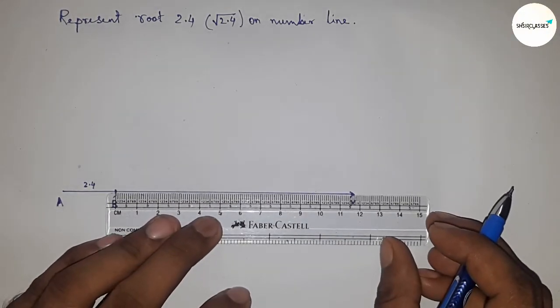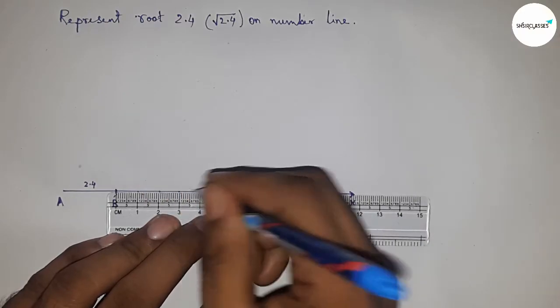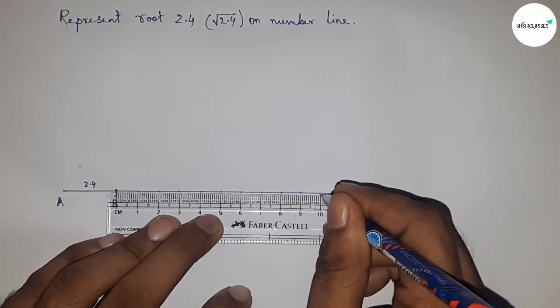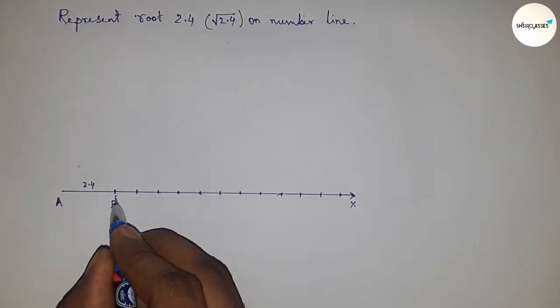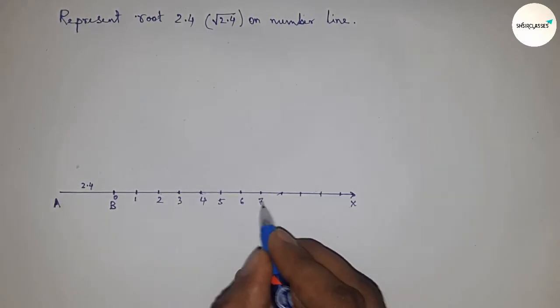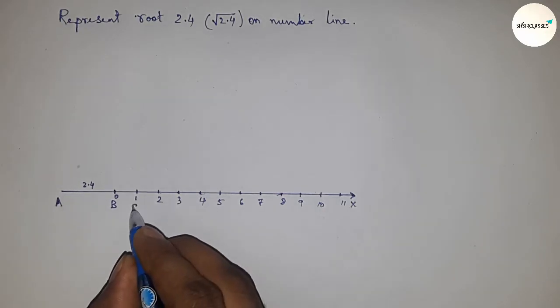Mark the numbers on the line from B to X by using a scale. Here I am using the scale to mark all the numbers. This is starting 0, 1, 2, 3, 4, and so on.